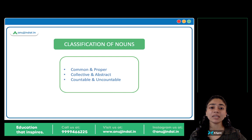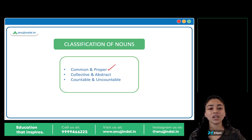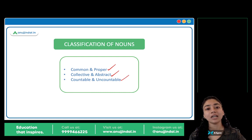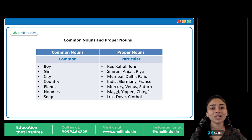Nouns have three main classifications. First is common nouns and proper nouns. Second is collective nouns and abstract nouns. Third is countable nouns and uncountable nouns. So, let's start with common and proper nouns first.